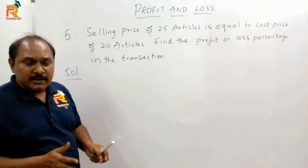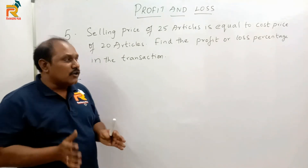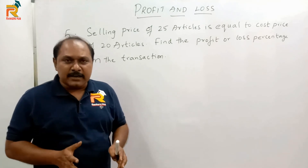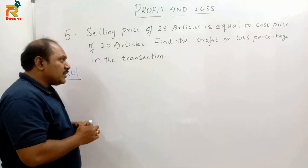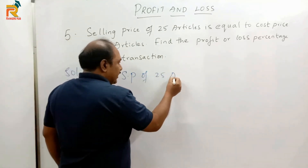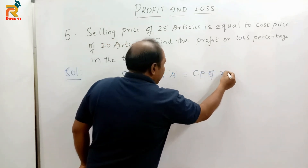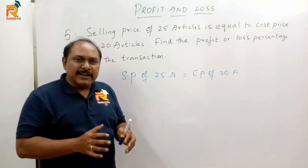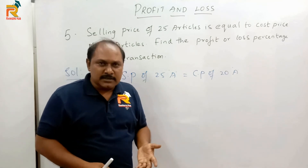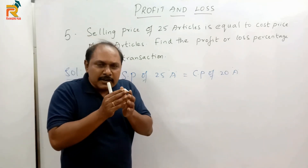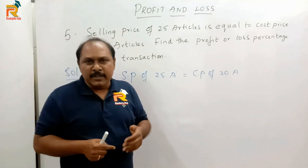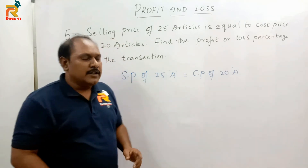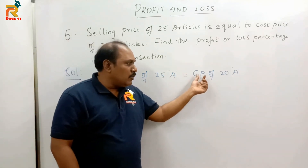Now let us look into the next model: Selling price of 25 articles is equal to cost price of 20 articles. Find the profit or loss percent in the transaction. This model of question can be expected in almost all competitive exams. Most students try to solve this by converting articles into price, making it lengthy. Instead, how do we answer it directly in terms of quantity? Profit or loss percentage in terms of quantity is calculated on the quantity sold.